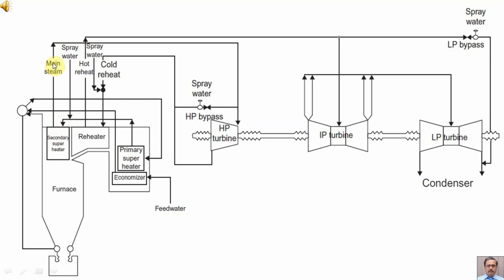The spray water is controlling the temperature of the main steam. This main steam goes to the inlet of the high pressure turbine. From the high pressure turbine, the steam expands and gives mechanical output. The exhaust of the high pressure turbine is called cold reheat.